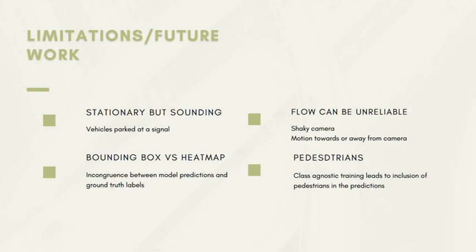Another limitation is that our models predict heat maps, while the ground truth has annotated bounding boxes. Since we use intersection over union, this incongruence possibly deflates our results. Also, since our methods are class-agnostic, pedestrians are also recognized as sound sources. Future work for the limitations related to optical flow includes using richer flow representations and longer temporal windows for calculating optical flow. The rest is more about establishing a congruence between what we're training for and what we're evaluating for, so that we can get a better picture of how well our models are doing.